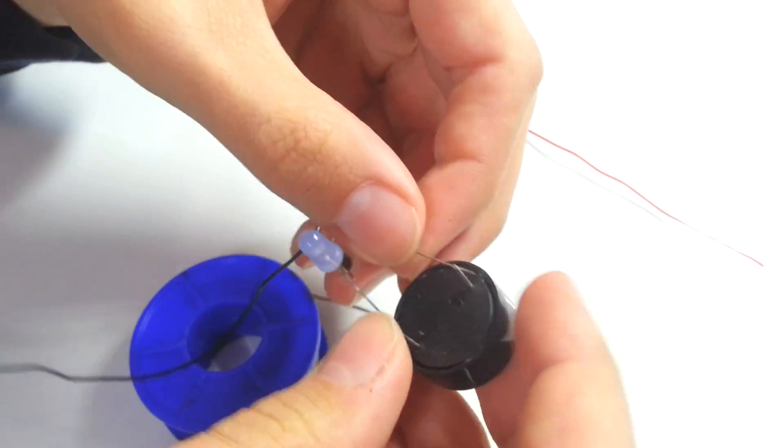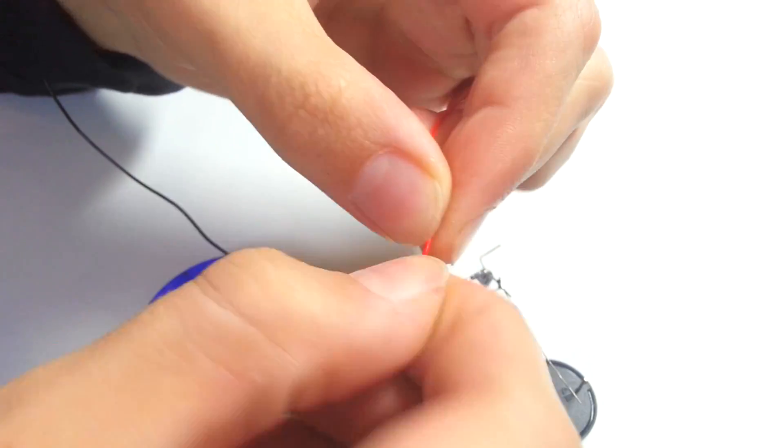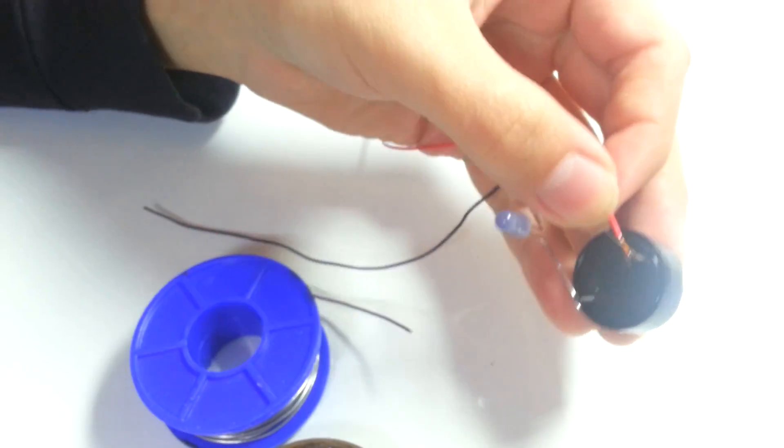And the last thing that requires soldering is red wire. We need to solder it to plus lead of the buzzer and to 10k ohm resistor. And this device is ready.